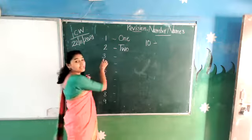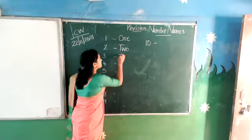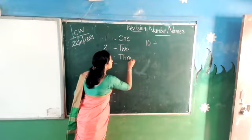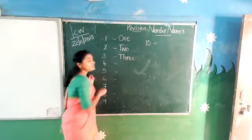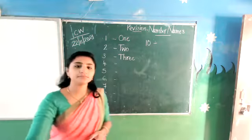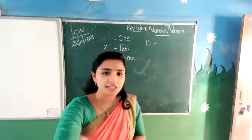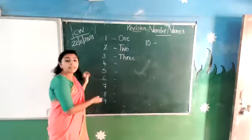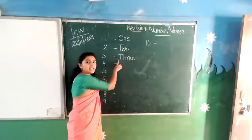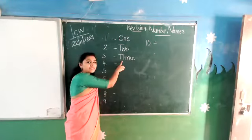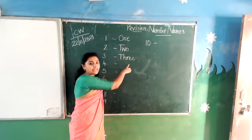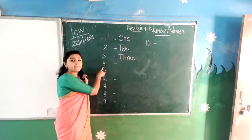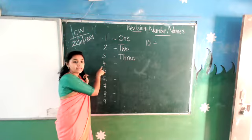Number 3. T-H-R-E-E — 3. What is the spelling of number 3? T-H-R-E-E. What is the spelling of number 4?